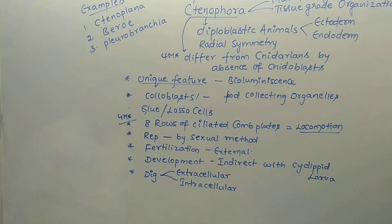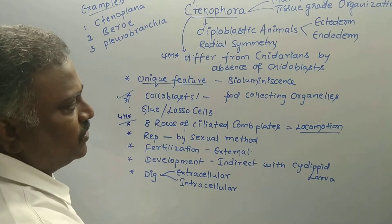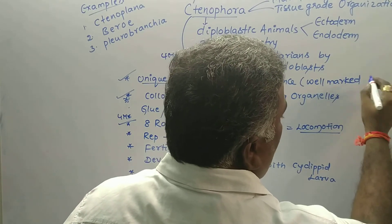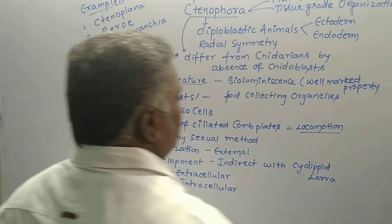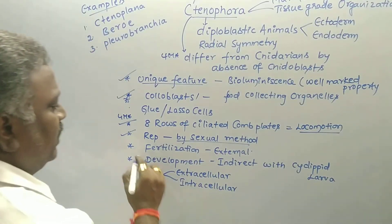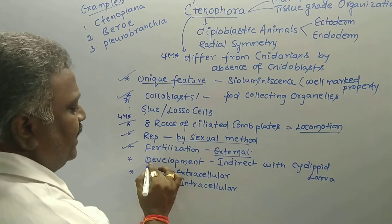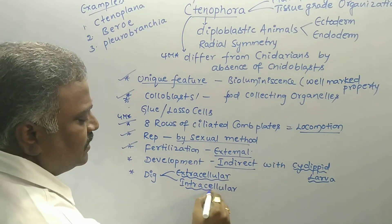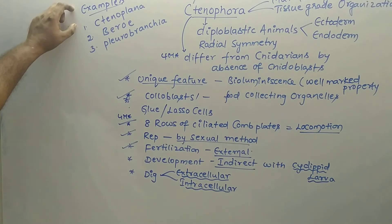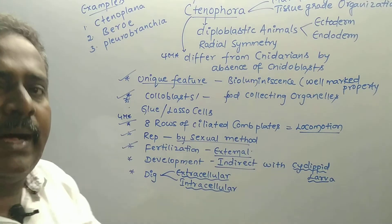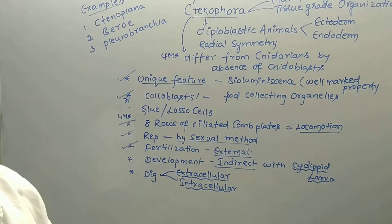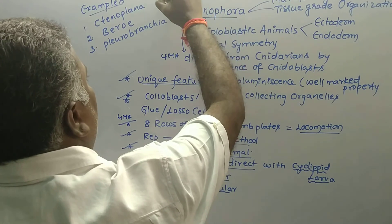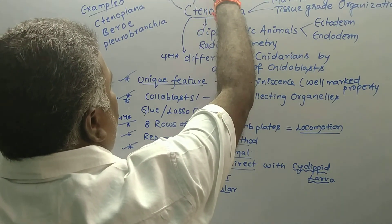The most important structures are coloblasts or lasso cells or glue cells, which are food-collecting organs. The well-marked property of all Ctenophores is bioluminescence. Reproduction is bisexual, fertilization is external, and development is indirect with a cydippid larva. Digestion is both extracellular and intracellular. Examples include Ctenoplana, Beroe, and Pleurobrachia. They exhibit biradial or radial symmetry.